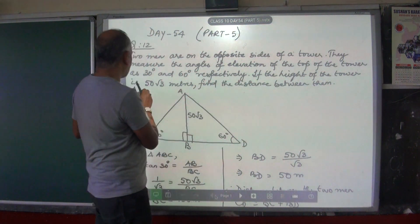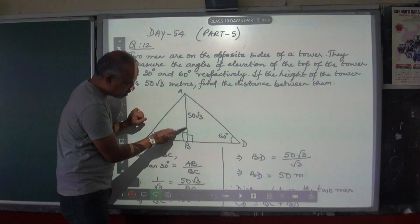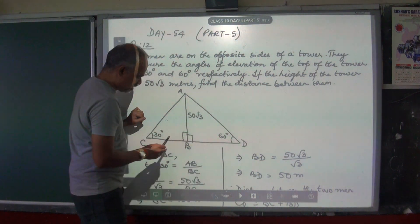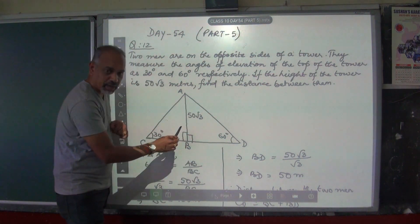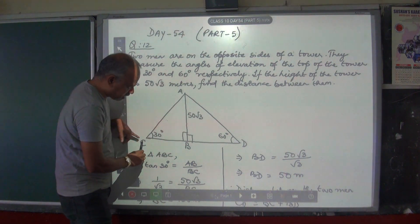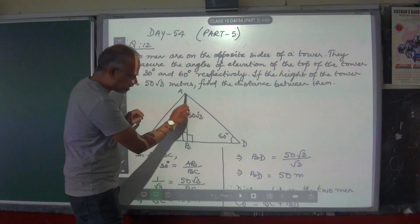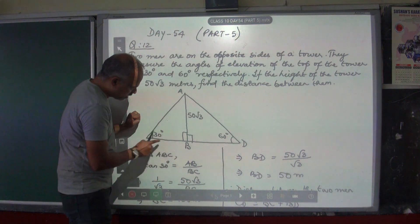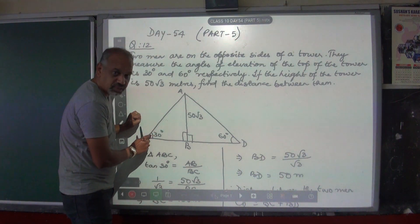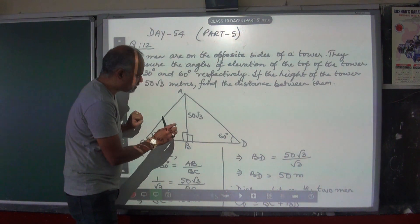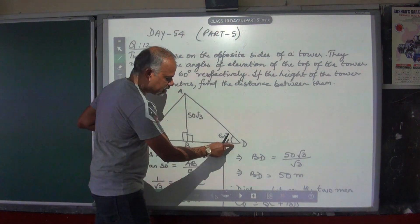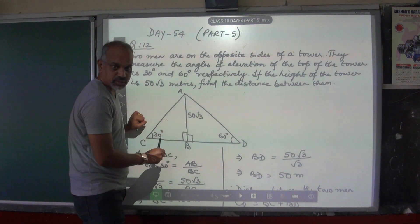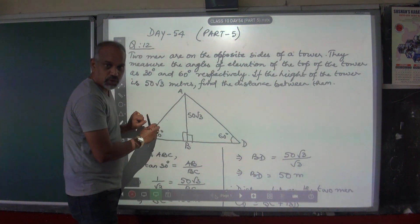The height of the tower is 50 root 3 meters. Find the distance between them — that is the distance between the two men, which is the distance from C to D. If you look at this figure, there are two right angle triangles. One is triangle ABC with a 30 degree angle, and the second right angle triangle is ABD with a 60 degree angle in it. The height of the tower is 50 root 3 meters. Let us use one triangle at a time.